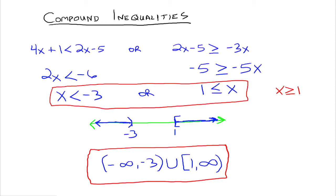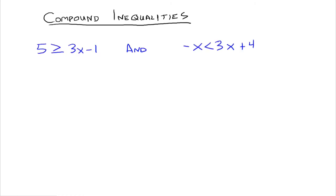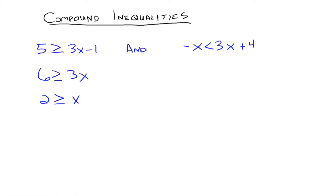Compare that to the next example, which uses the word 'and'. Now we're looking for all real numbers that are solutions to both inequalities — numbers that make both of them true. Solving the left one: add 1 to both sides to get 6, divide both sides by positive 3. The inequality does not switch around because it's a positive number. You have 2 is greater than or equal to x, which means x is less than or equal to 2.